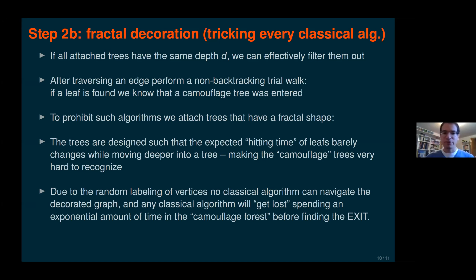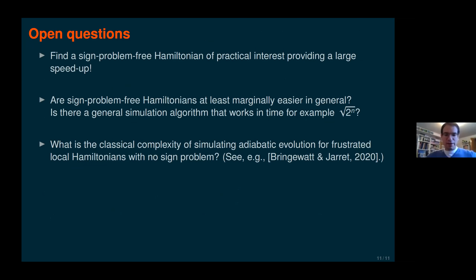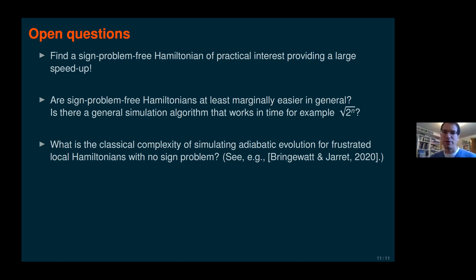That was a brief discussion of how our construction works. For open questions: the first is to find a sign-problem-free Hamiltonian of practical interest providing a large speedup. Another fundamental question is whether sign-problem-free Hamiltonians are at least marginally easier in general — for example, is there a general simulation algorithm running in time √(2ⁿ)? Our example showed classical algorithms need at least something like the fifth root of 2ⁿ queries, and 2ⁿ would be the hardest possible. There's still hope that a slightly sub-exponential algorithm exists in general.